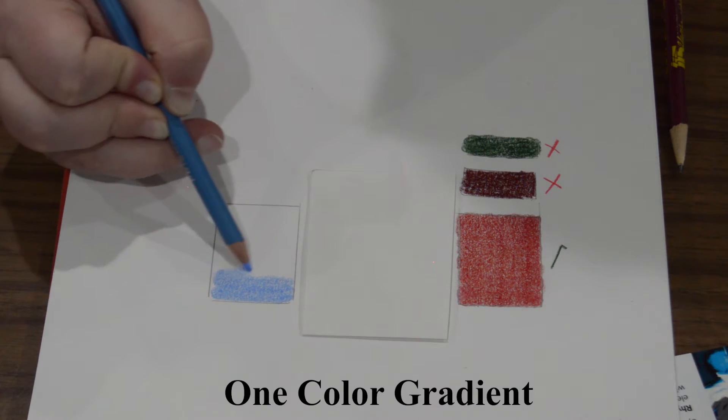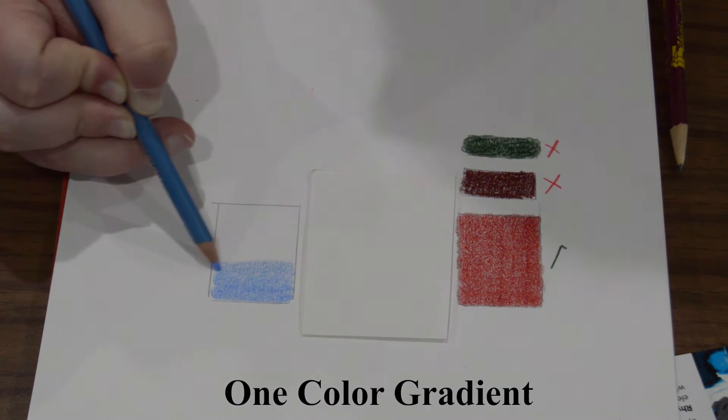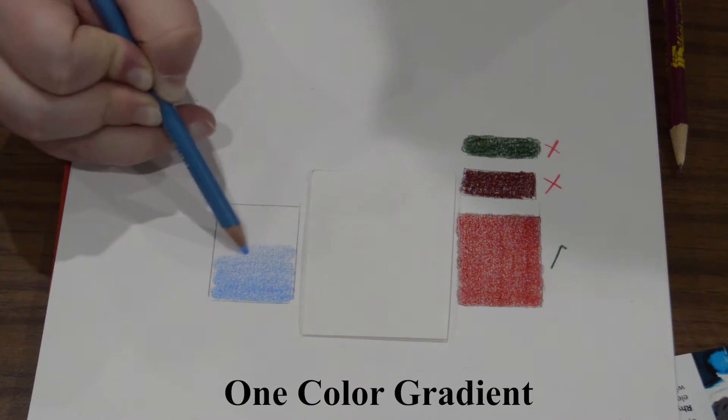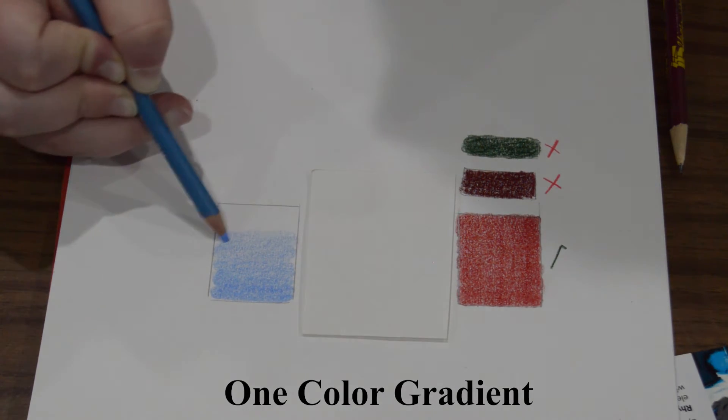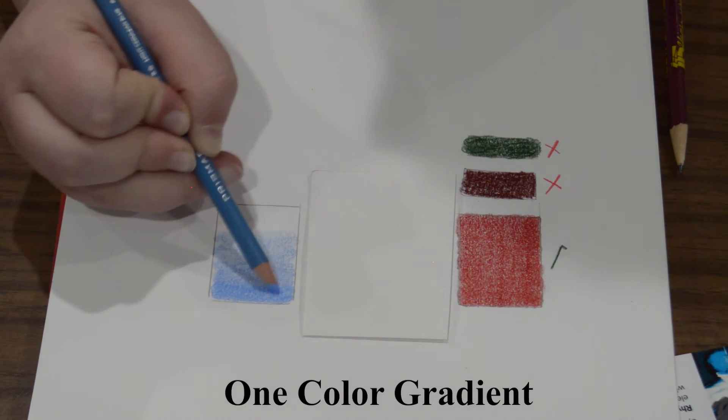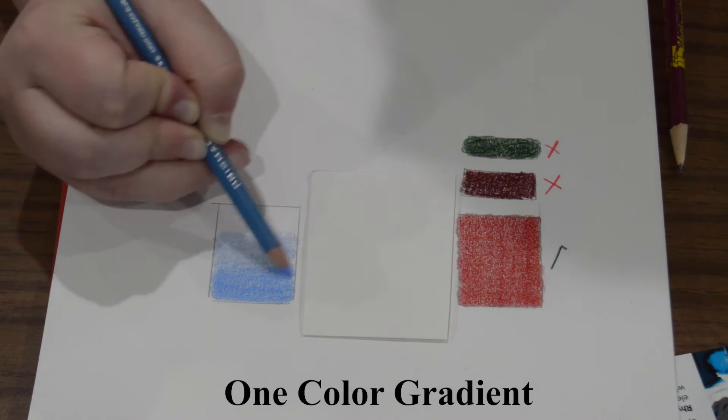I place a piece of scrap paper on the places that I didn't want to accidentally smudge. Next we'll add more layers, making sure that as we go down the rectangle we're using lighter pencil pressure.